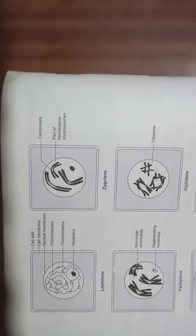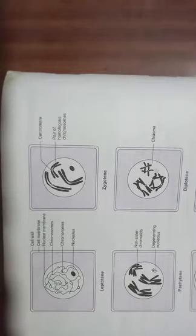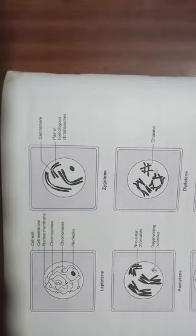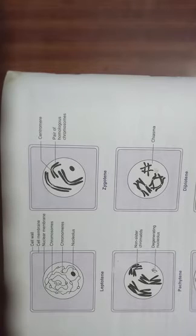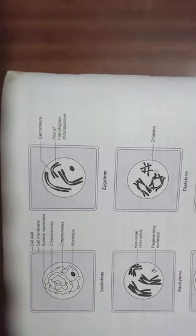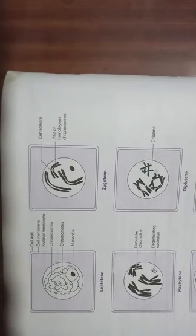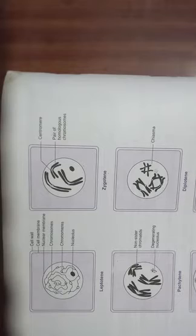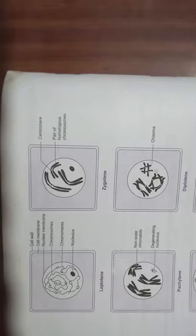The last sub-phase is diakinesis. In diakinesis, you can see the homologous chromosomes appear thick and ring-shaped. The nucleus and nuclear envelope disappear, and the spindle begins to form — you can see the spindle beginning to form here.